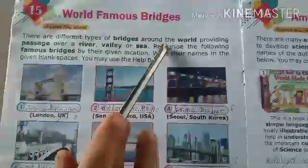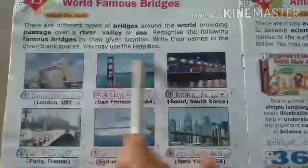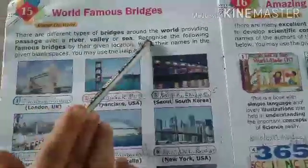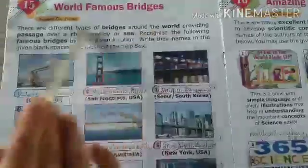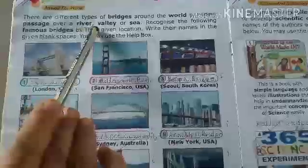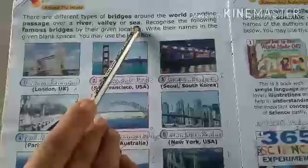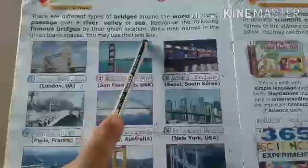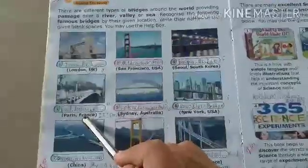World Famous Bridges. There are different types of bridges around the world, providing passages over rivers, valleys, or seas. Recognize the following famous bridges by their given location and write their names in the given blank spaces. You may use the help box. So see, children — these are all the different types of bridges.